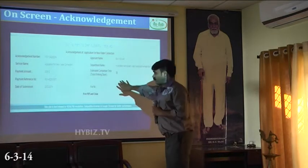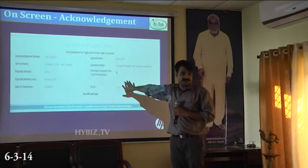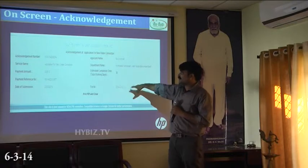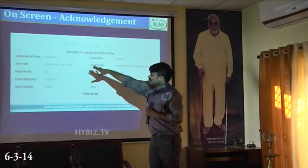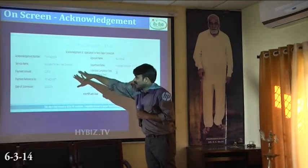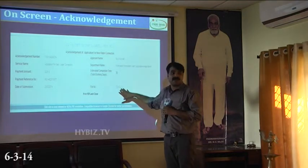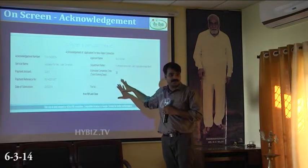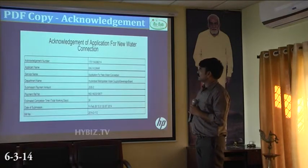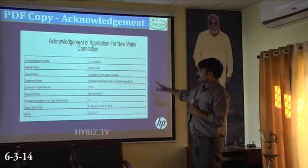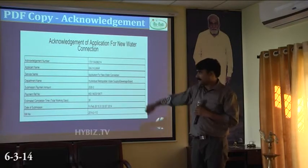Now we have made our cost payment. Here we are printing the acknowledgement slip. The acknowledgement slip contains the token number, the applicant's name, service name, payment amount, payment service number, and all the required mandatory details. This is the document you will be taking out and giving to the user.